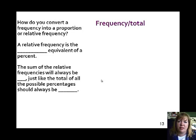How do you convert a frequency into a proportion or relative frequency? We've already done this, but you just take your frequency and divide it by the total. Relative frequency is the decimal equivalent of a percent. It always needs to be less than 1. The sum of relative frequencies will always equal 1, just like the total of all possible percentages should be 100. And that's the end of part 1. I think that's enough for one lesson. I will see you tomorrow.